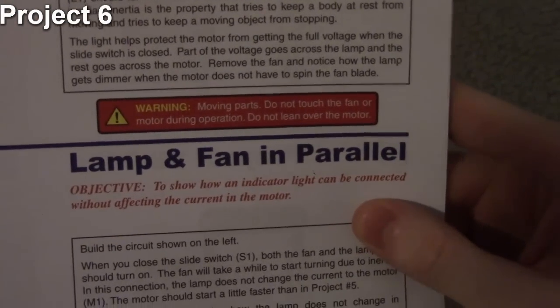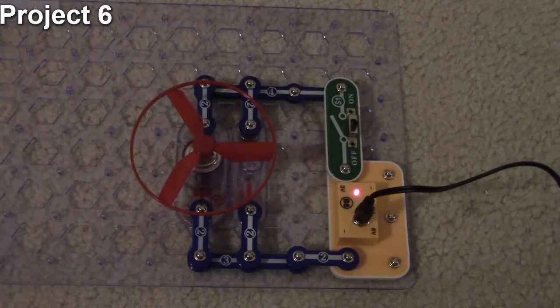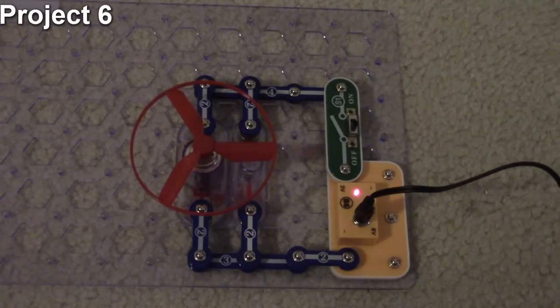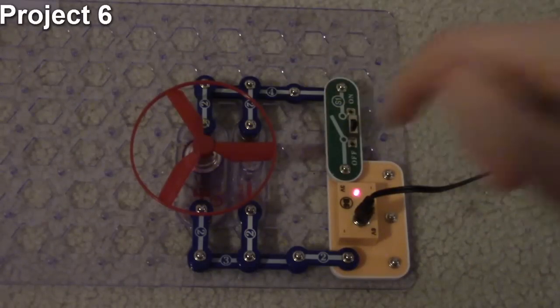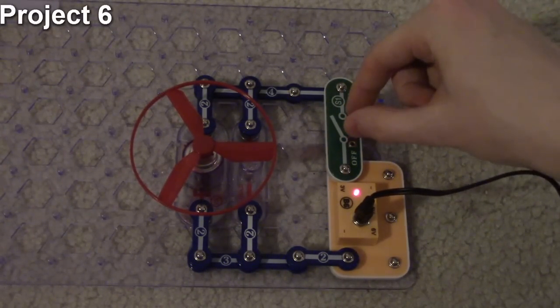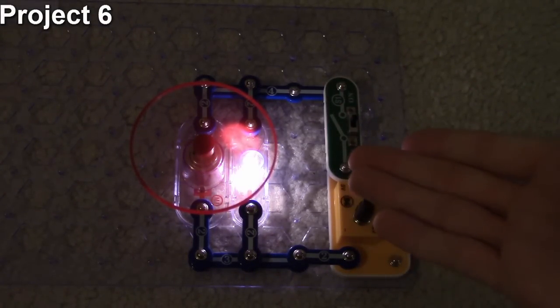Project number six is a lamp and fan in parallel. The objective is to see how they work when connected in parallel. As we saw in project five, in series on the same path their power output was reduced. When we put each item — the fan and the lamp — on their own current path, the lamp is bright and there's a lot of air coming off the fan.